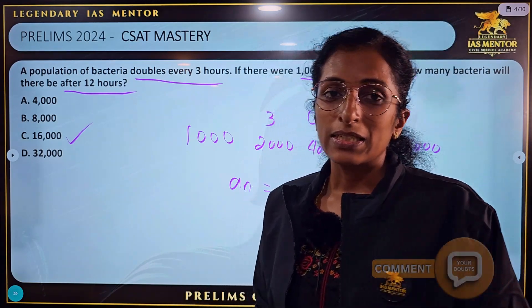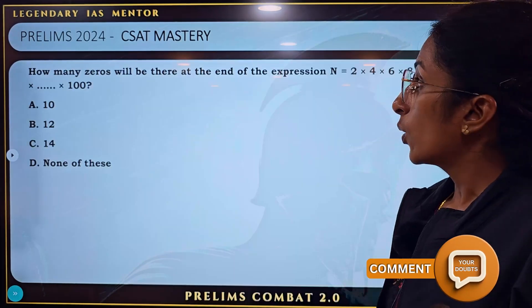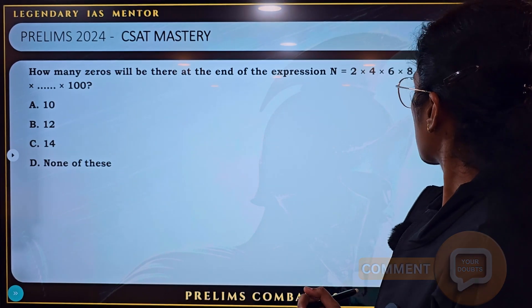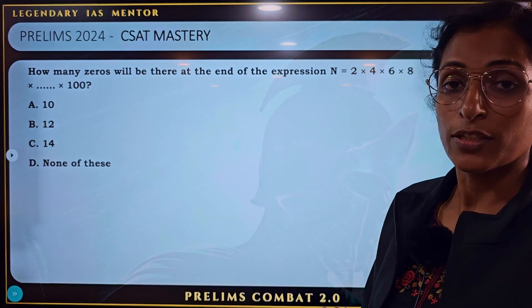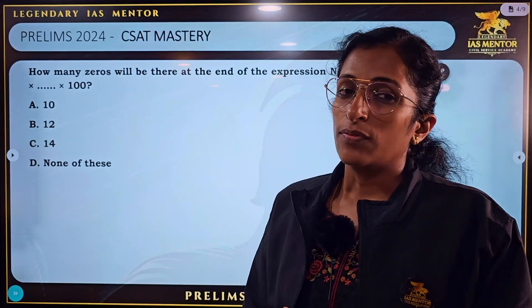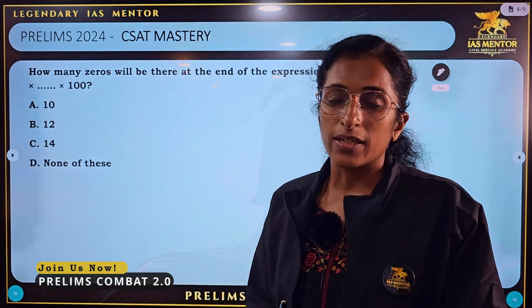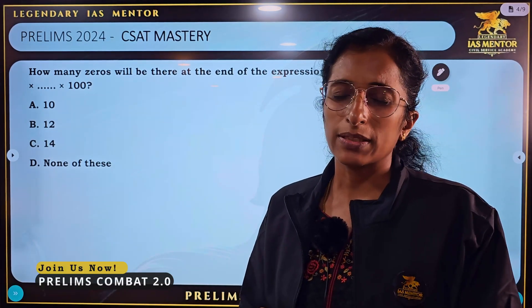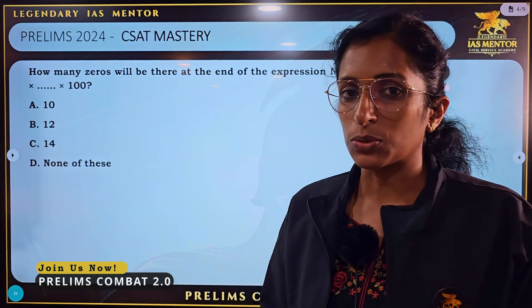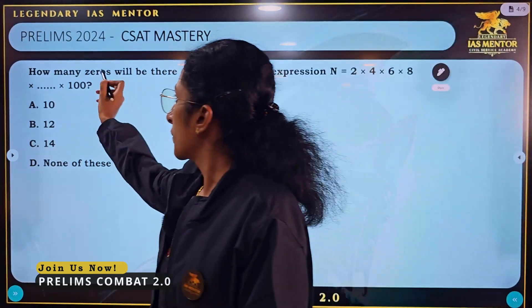Question 3. How many zeros will there be at the end of the expression N equal to 2 into 4 into 6 into 8 into ... into 100? All even numbers from 2 to 100 are multiplied — how many zeros are in the final product?